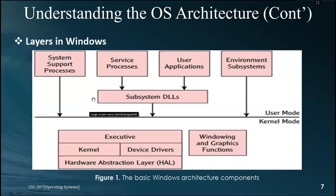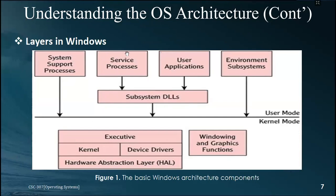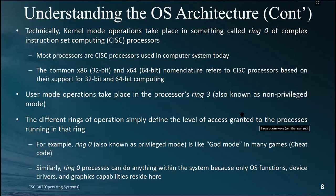In the user mode layer we have: system support processes, service processes, user applications, environmental subsystems, and subsystem DLLs. System support processes communicate directly with the kernel mode. Service processes and user applications communicate with the kernel mode using subsystem DLLs. Environmental subsystems can also communicate directly with the kernel mode. In the kernel mode we have different executive processes, Windows and graphics functions, kernel, device drivers, and the hardware abstraction layer.